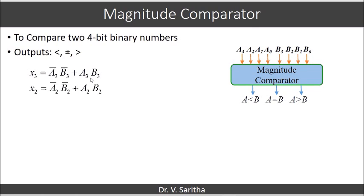Similarly, X2 is 1 when A2 and B2 are equal, X1 is 1 when A1 and B1 are equal, and X0 is 1 when A0 and B0 are equal. When all of X3, X2, X1, and X0 are 1, we can say that A equals B.